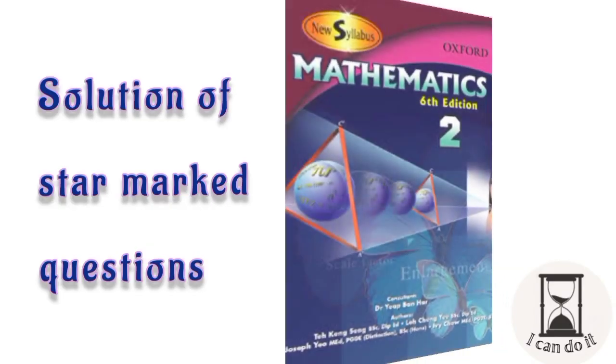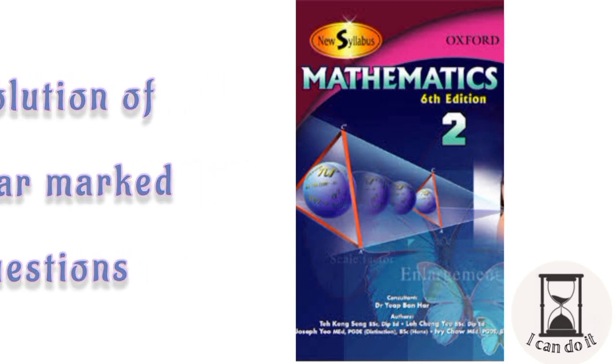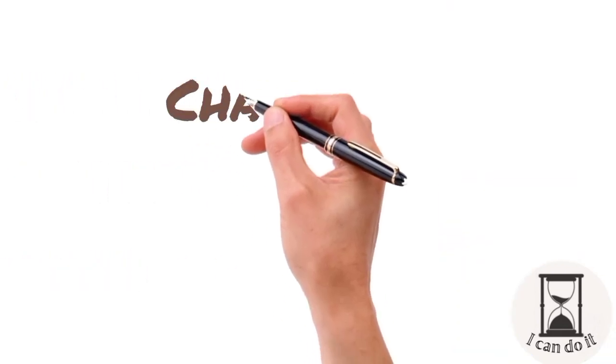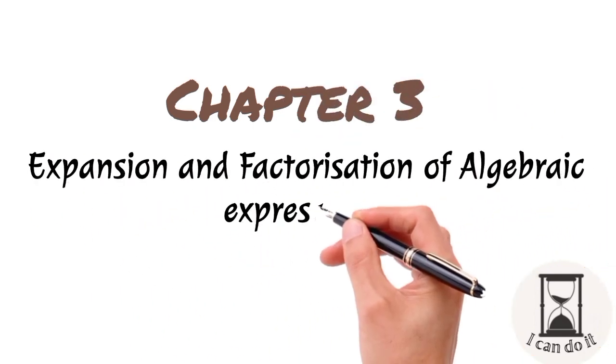This video is all about how to solve the star-marked questions of Oxford Mathematics Book 2, 6th Edition. The first star-marked question in this book is in Chapter 3, Expansion and Factorization of Algebraic Expressions.